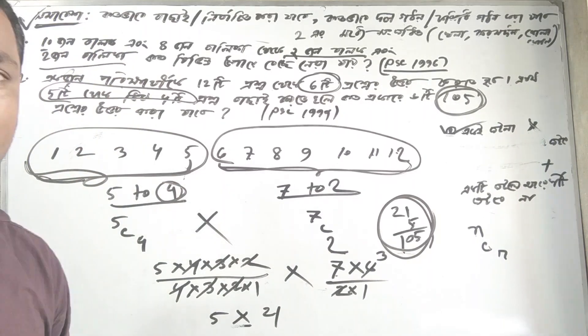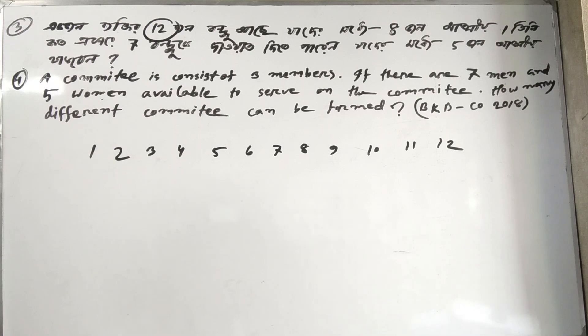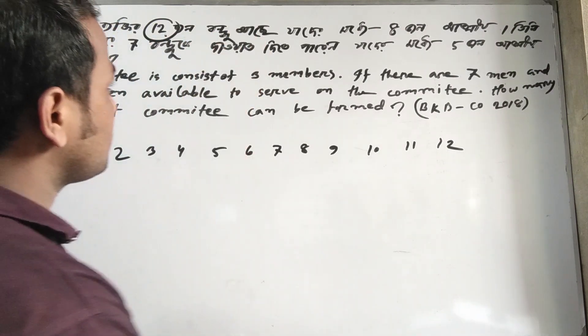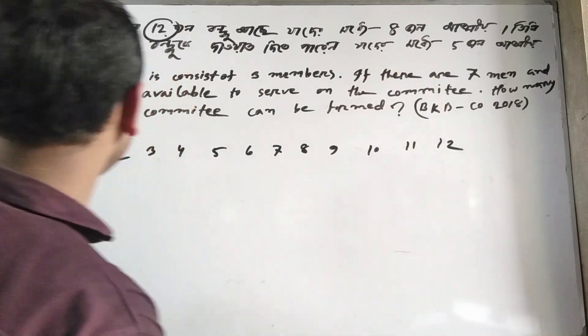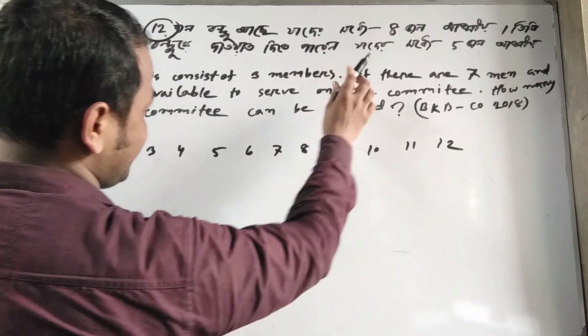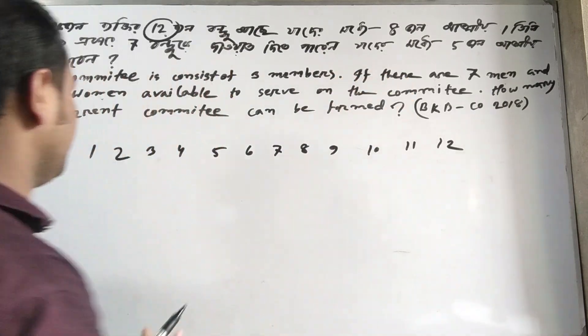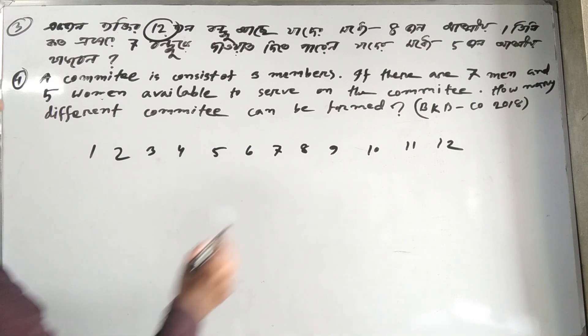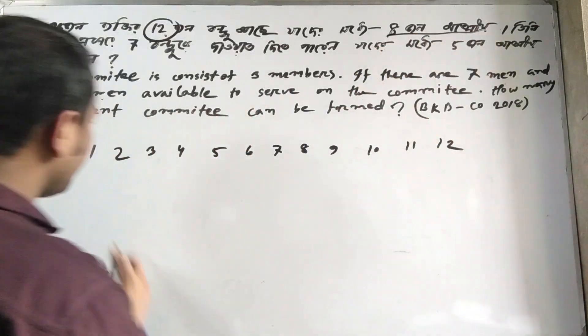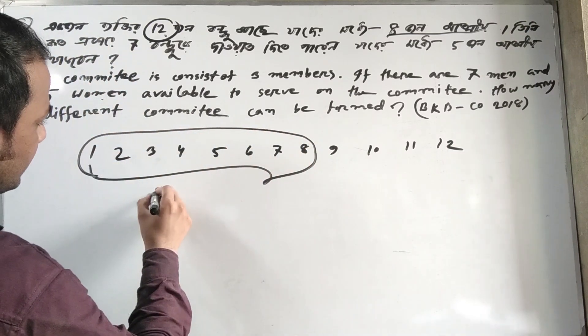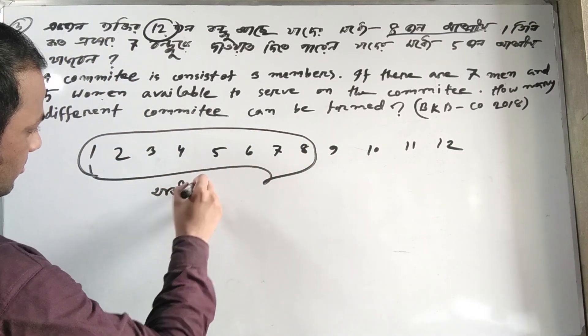Now consider problems with different modes or categories. For example, if you have three people in different modes, you need to multiply the possibilities. If each person can be in one of several modes, the total combinations increase accordingly.